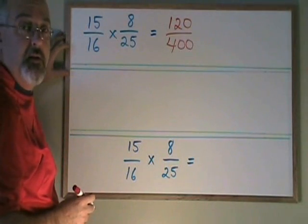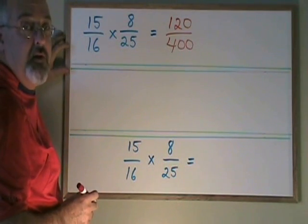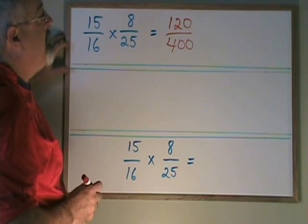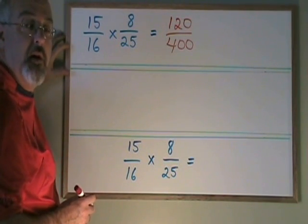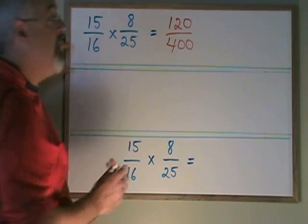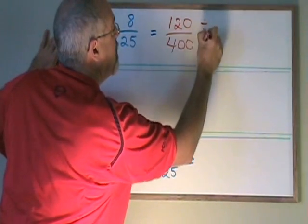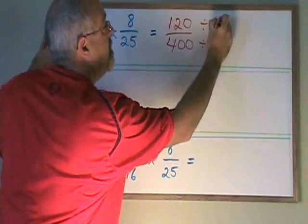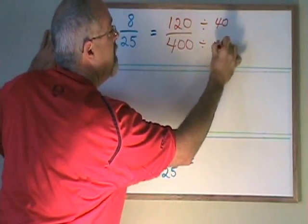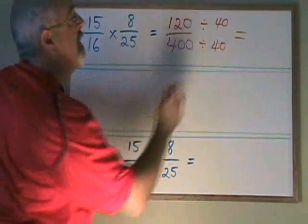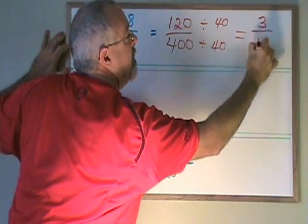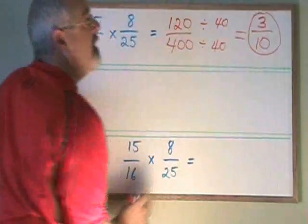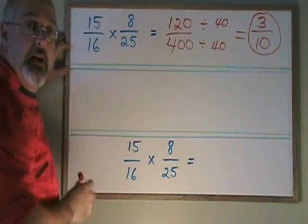We have an answer, but this answer can be reduced. So we will reduce it now. 120 and 400 have a common factor of 40. So if I divide both top and bottom by 40, I get 3 over 10. 3 tenths is the answer to this multiplication.